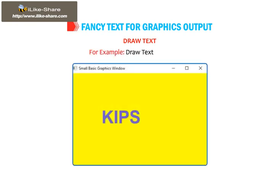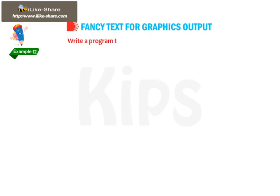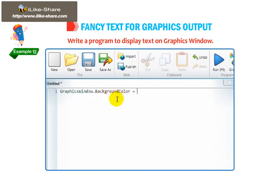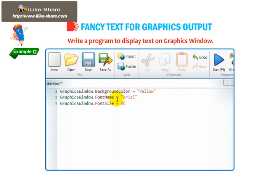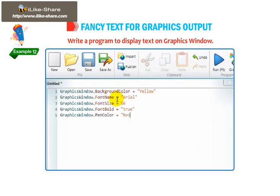For example, DrawText(5, 5, "Kips"). This method uses the brush color, not the pen color. Text is drawn like other Graphics Objects. Write a program to display text on Graphics Window: GraphicsWindow.BackgroundColor = "Yellow". GraphicsWindow.FontName = "Arial". GraphicsWindow.FontSize = 56. GraphicsWindow.FontBold = "True". GraphicsWindow.PenColor = "Red".